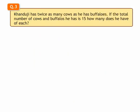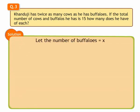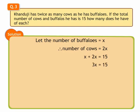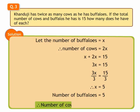3. If the total number of cows and buffaloes is 15, how many does he have of each? Let us assume number of buffaloes to be x. Number of cows are twice as many as buffaloes. The total number of cows and buffaloes is 15. That is, x plus 2x is equal to 15. We get 3x is equal to 15 on adding. Dividing the equation by 3 on both sides, we get x is equal to 5. Hence, the number of buffaloes is 5 and number of cows will be 2 into 5, which is 10.